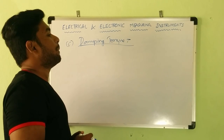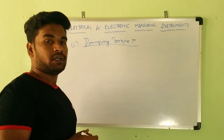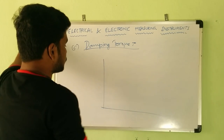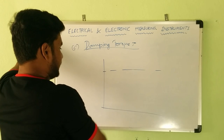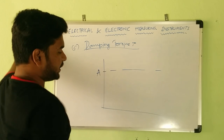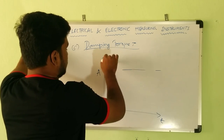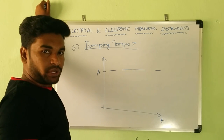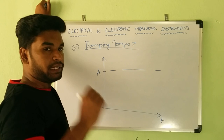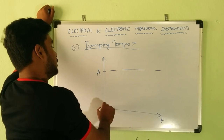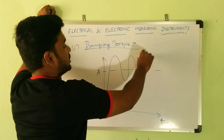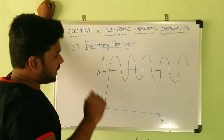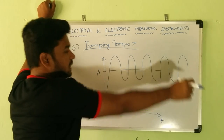Based on the level of damping, the behavior of the system is classified into three types. This is the steady state value of the quantity to be measured. In case there is no damping — if we did not provide any damping and there is only control torque and deflecting torque — the response of the system is sustained oscillations. An undamped instrument will have undamped oscillations.